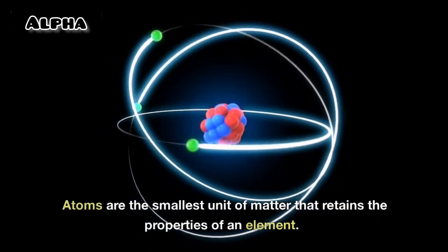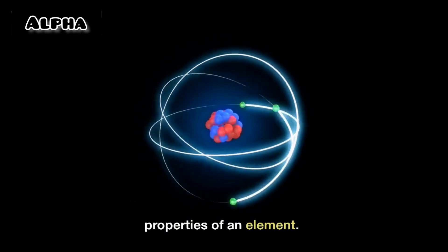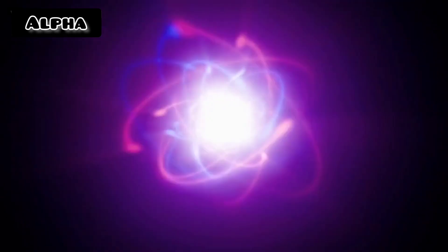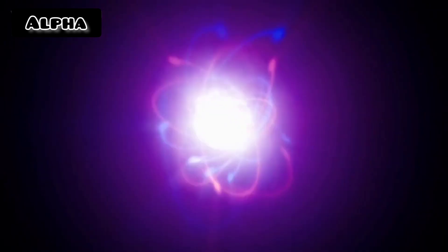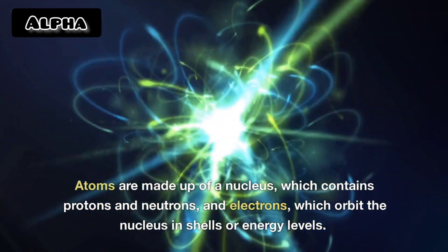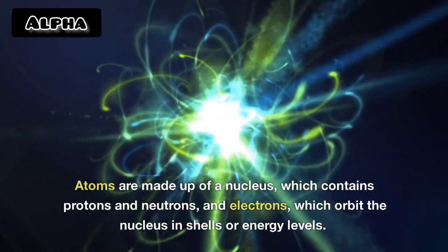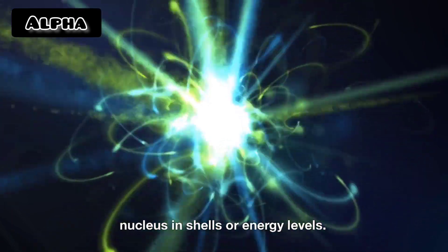Atoms are the smallest unit of matter that retains the properties of an element. Atoms are made up of a nucleus, which contains protons and neutrons, and electrons, which orbit the nucleus in shells or energy levels.